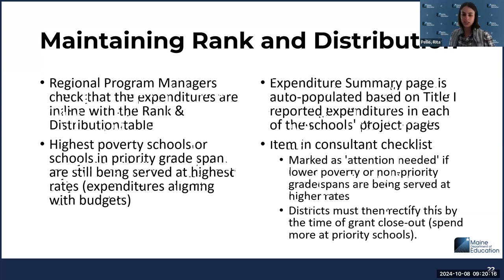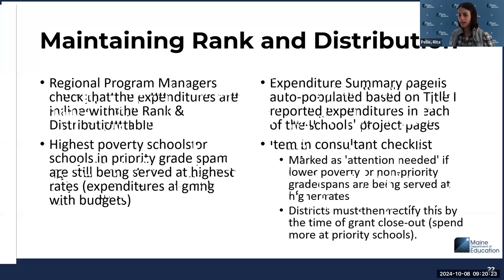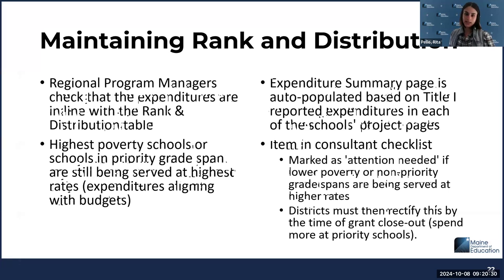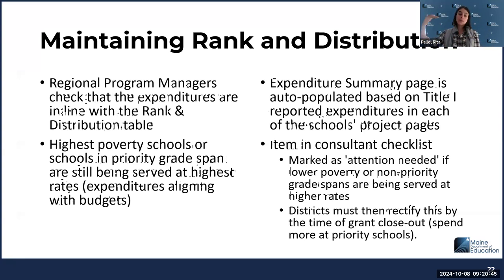Part of the consultant checklist reviewed as the performance report will have an item that says 'maintaining rank and distribution.' The regional program manager will make a note in that consultant checklist if they notice that you need to spend more funds down at a particular school in order to maintain rank and distribution. Note that it's the expenditures that are being reported — that is what is auto-populating the summary page.